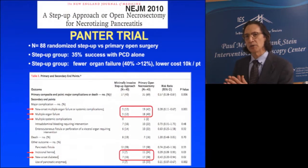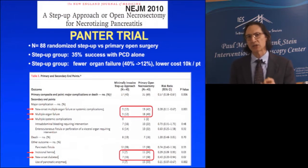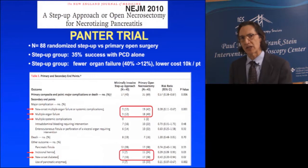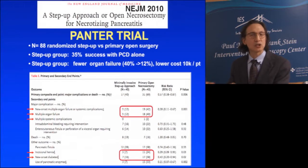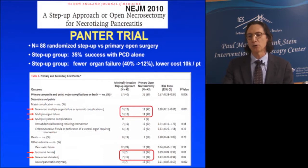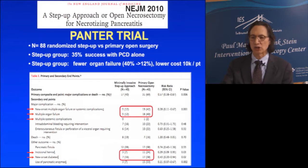The PANTER trial, published in the New England Journal of Medicine in 2010, was truly a landmark study. Eighty-eight patients were randomized between step-up and primary open surgery. Up until then, open necrosectomy was the gold standard. In the step-up group, 35% achieved success with percutaneous drainage alone without needing to step up to debridement. The step-up group also had significantly fewer organ failures — dropping from 40% to 12% — and a significantly lower cost of approximately 10,000 euros less per patient.